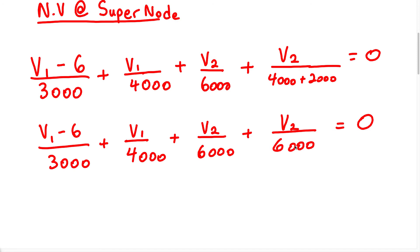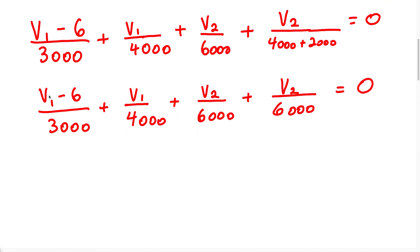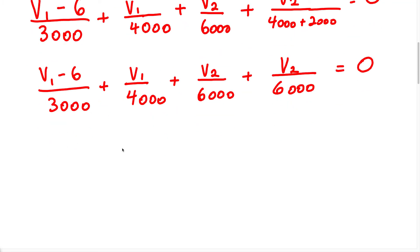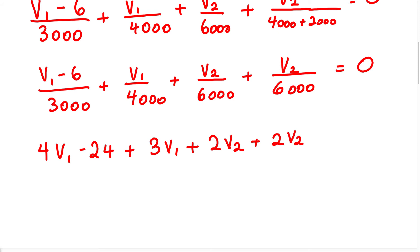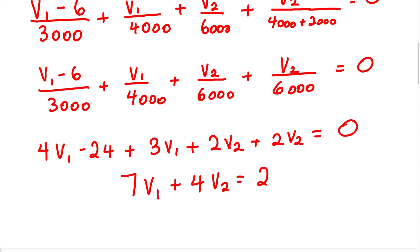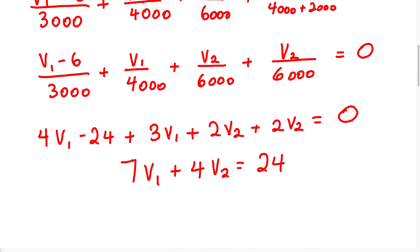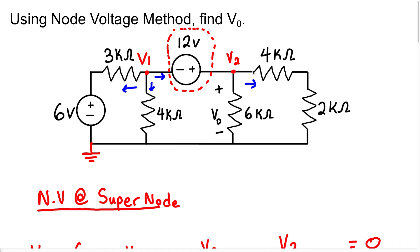Now let's get rid of the denominators. The LCD in this situation is 12,000, so we multiply each term by 12,000. That leaves us with 4V1 minus 24 plus 3V1 plus 2V2 plus 2V2 equals zero. Simplifying, we get 7V1 plus 4V2 equals 24. I'm going to call this Equation 1, which is the node voltage equation at the supernode.